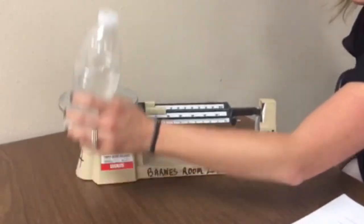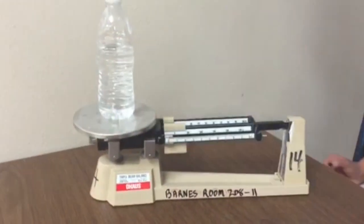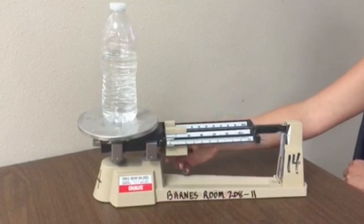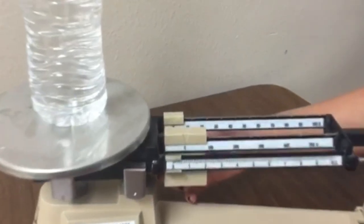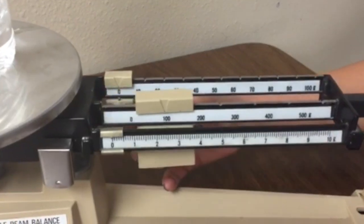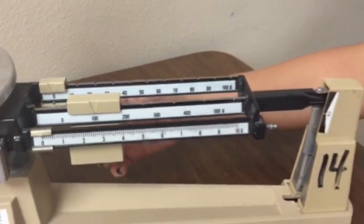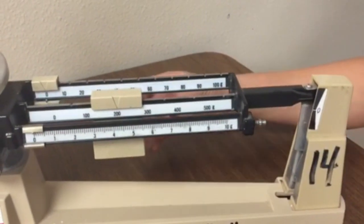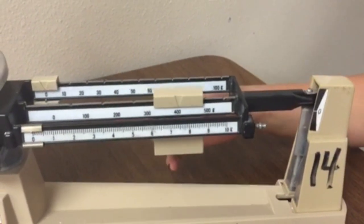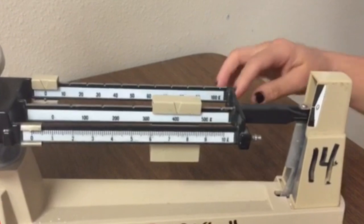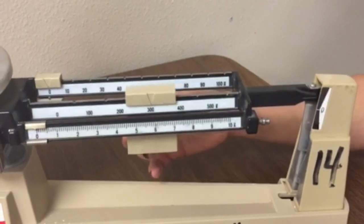We're going to measure this water bottle. When you're measuring, you need to make sure that you start with the hundreds, the largest one. It's in the middle and it still hasn't gone down. That means it's too much, so I'm going to go back to 300.